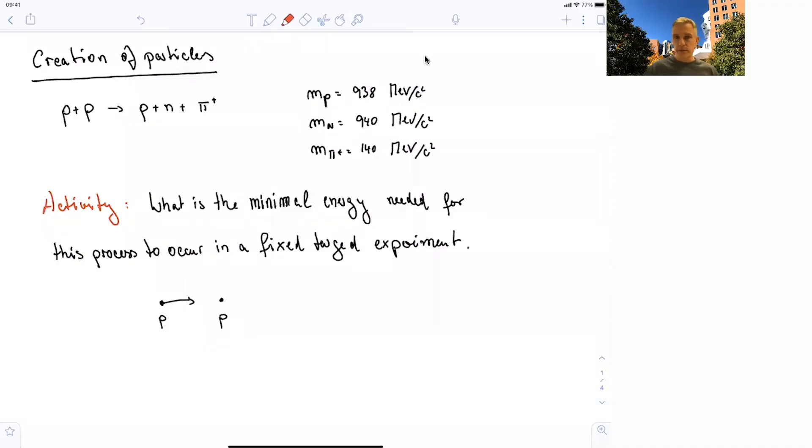Welcome back to A20 Special Relativity. In the previous section, we have seen how we can look at energy and momentum of particles in a decay. Here, we now want to, in collisions of particles, create new particles.